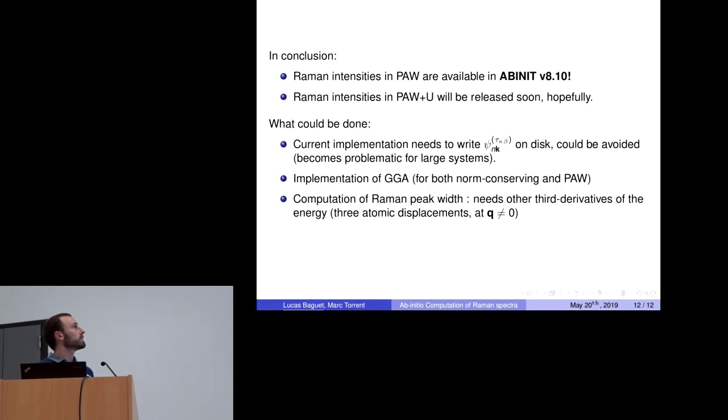To conclude, Raman intensities in PAW are available now in Abinit version 8.10. The plus U implementation will be ready soon. Now that huge work has been done on the nonlinear routines, we can make much more benefit of it by implementing, for example, GGA or also computing other third-order derivatives. Thank you.